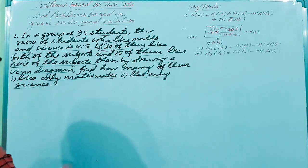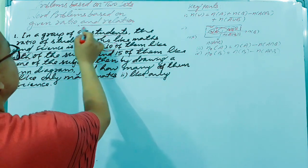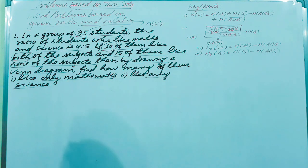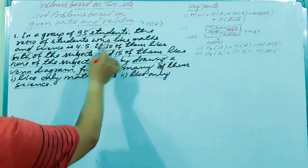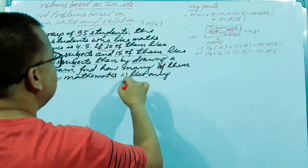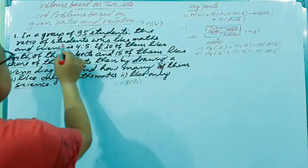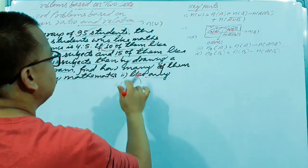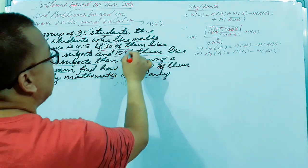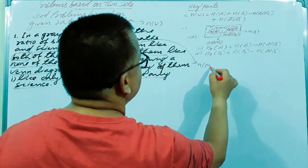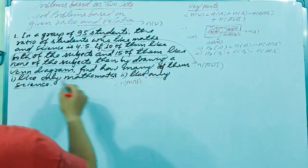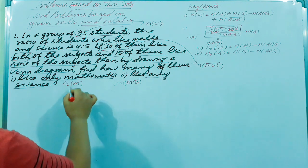Let's interpret what this data represents. The 95 students gives us n(U), the total number of students. The ratio 4 is to 5 for students who like maths and science means we can suppose 4x and 5x. The 10 who like both subjects gives us n(M ∩ S) = 10. The 15 who like none gives us the complement of M union S, which equals 15. We want to find only math and only science.